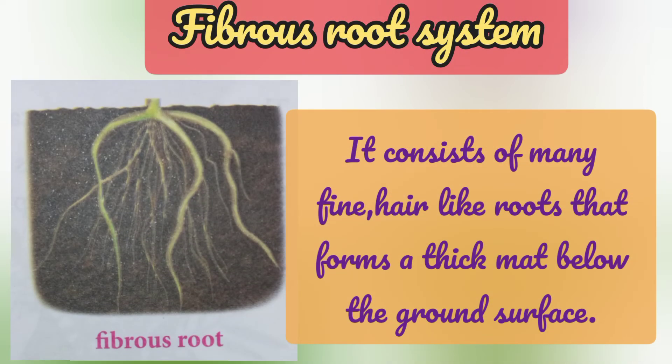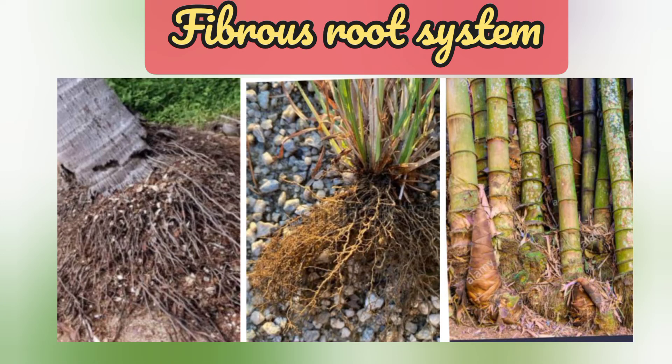Next, the fibrous root system. It consists of many fine, hair-like roots that form a thick mat below the ground surface. The roots of coconut tree, grass, and bamboo tree are some examples of the fibrous root system.